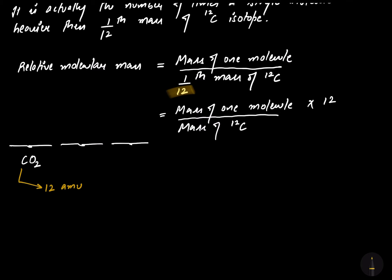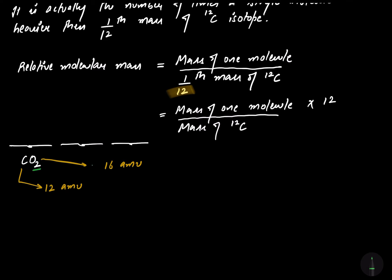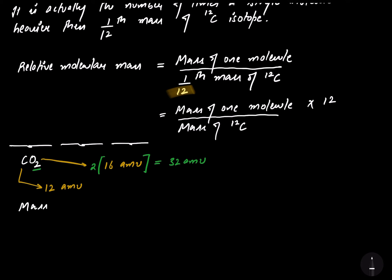What is the mass of oxygen? It is 16 AMU. But here, oxygen atoms are two in number, so we multiply by two, giving 32 AMU. The mass of CO2 comes out to be 12 plus 32, and you add them up to get 44 AMU.